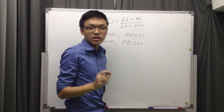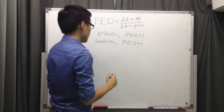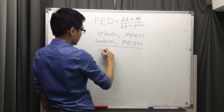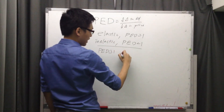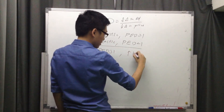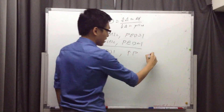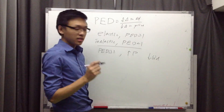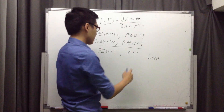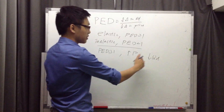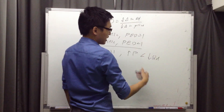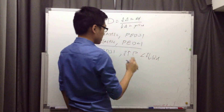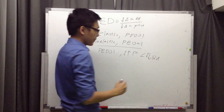Let's look at the implication on total revenue. If PED is greater than 1 and you increase your price, quantity demanded is going to decrease — that's for sure. But which change is greater? If PED is greater than 1, then the increase in price is going to be less than the decrease in quantity demanded in percentage terms. The percentage increase in price is less than the percentage decrease in quantity demanded.